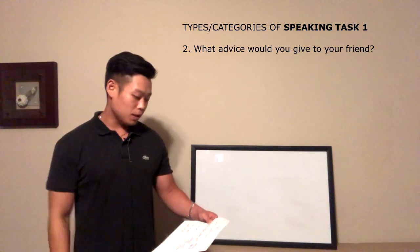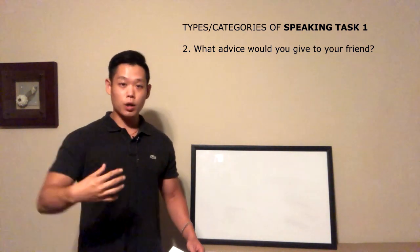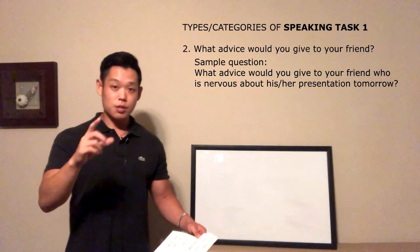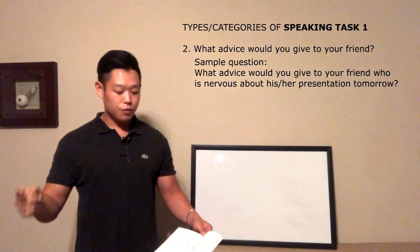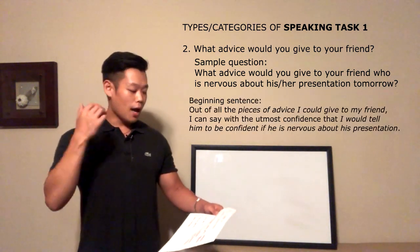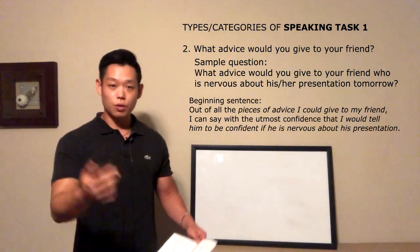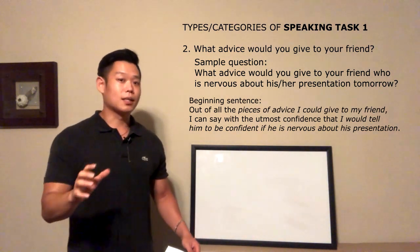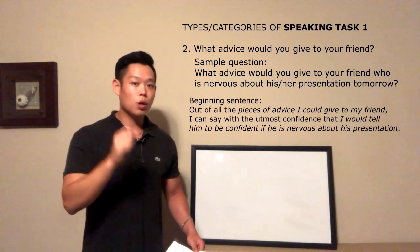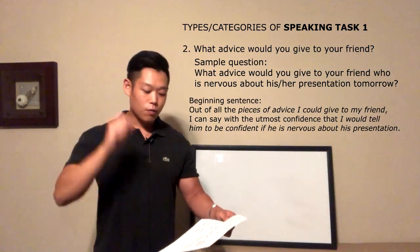The second type of Task 1 speaking question is 'what advice would you give to your friend?' The sample question we'll work with is: 'What advice would you give to your friend who is nervous about his or her presentation tomorrow?' For that question, your beginning sentence is: 'Out of all the pieces of advice that I could give to my friend, I can say with the utmost confidence that I would tell him to be confident if he is nervous about his project.' Always use the question to your advantage when forming your beginning sentence.